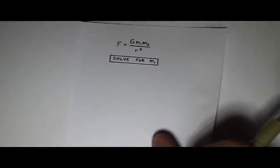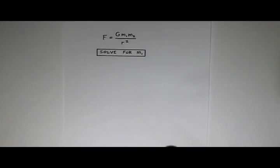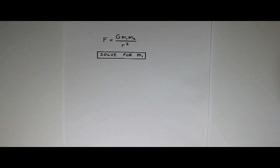Okay. Let's try one more. So how about this equation? This says F equals G times m1 times m2 divided by r squared. And I want to solve this for m1.